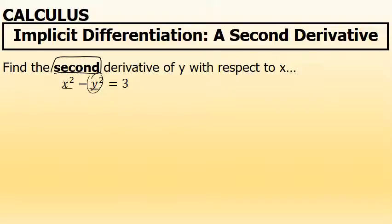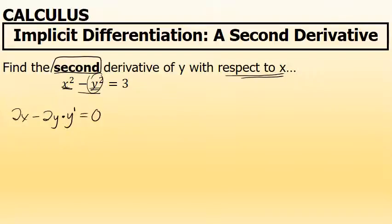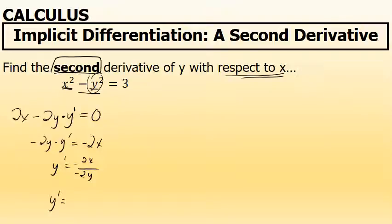Since we're finding the second derivative, the first step is to find the first derivative. Differentiating both sides: the derivative of x squared is 2x, and the derivative of negative y squared is negative 2y times y prime. On the other side, the derivative of 3 is 0. Solving for y prime: negative 2y times y prime equals negative 2x. Dividing both sides by negative 2y gives x over y. So the first derivative of x squared minus y squared equals 3 is x over y.